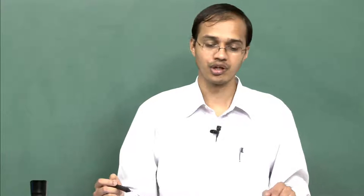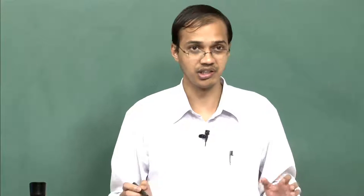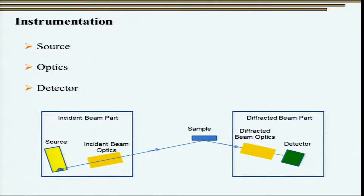Turning to instrumentation: for X-rays we had a source, incident beam optics, sample, diffracted beam optics, and detector. Something similar — not exactly the same — exists for neutrons. We will see how instruments for carrying out neutron diffraction are set up.